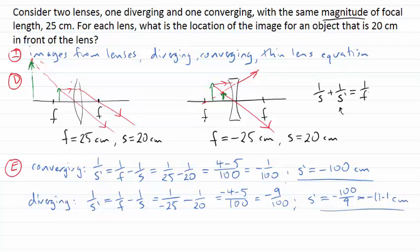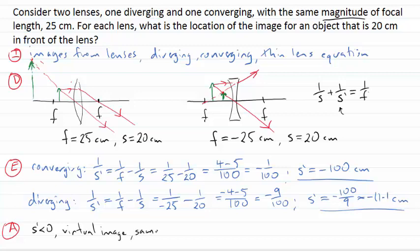So moving to my final part of my solution, my assessment step here, I can see I've got negative values for both the image distances, which is telling me, so if S prime is negative, I'm expecting a virtual image on the same side of the lens as the object. And indeed, that's what my diagrams indicated I should have had. For both of these diagrams, I ended up with an image that was on the same side of the lens as my object.